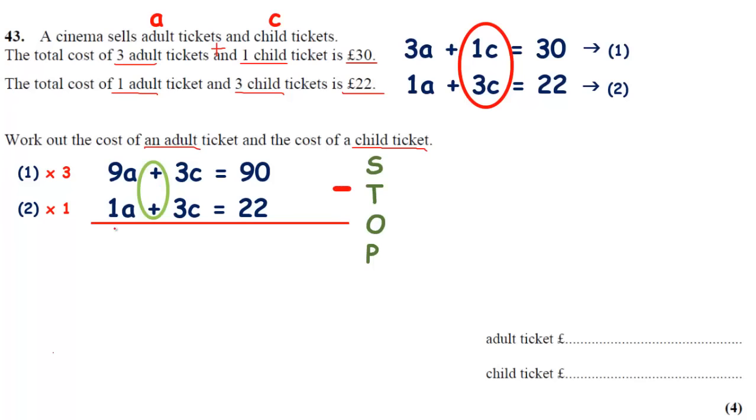9A take away 1A is 8A. 3C take away 3C is nothing. They should always cancel out. 90 take away 22 is 68.